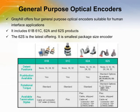Greyhill offers four general purpose optical encoders suitable for human interface applications. The 61B series product was the first optical encoder. On customer demand, Greyhill subsequently developed the 61C, 62A, and 62S products, which are lower cost and smaller package sizes. The 62S is the latest offering and our smallest package size encoder. It is available with many standard catalog options as shown in the table.